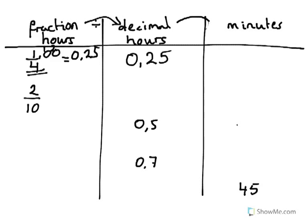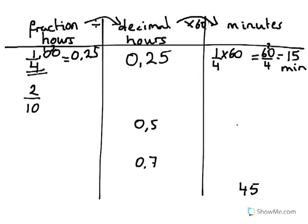If we want to then change our decimal hours into minutes, we multiply by 60. It's actually easier to keep our hours in terms of fraction, because 1 quarter times 60 is easier to work out — we just work out 60 divided by 4, which is 1 and 2 left over, and 4s into 20 goes 5 times. So a quarter of an hour is the same as 15 minutes.